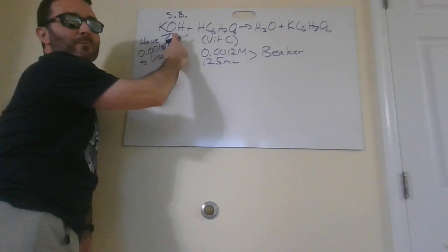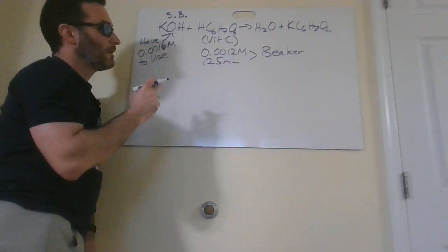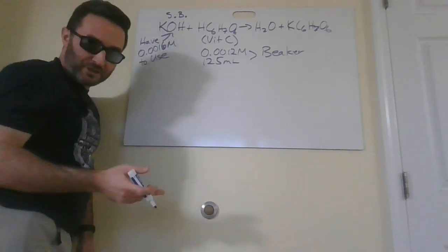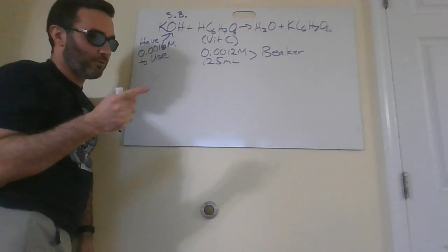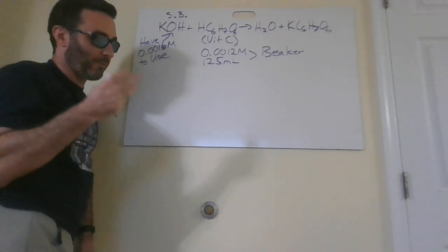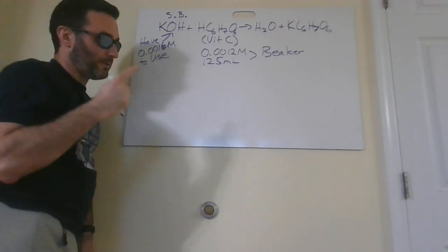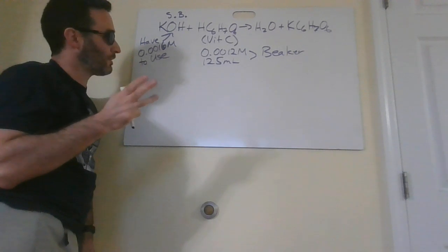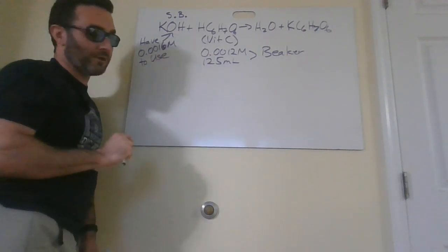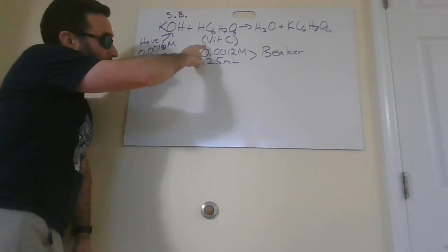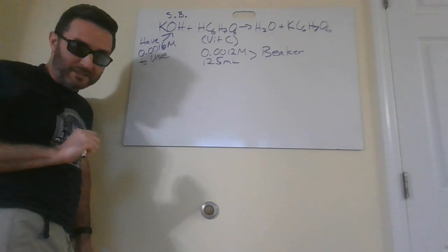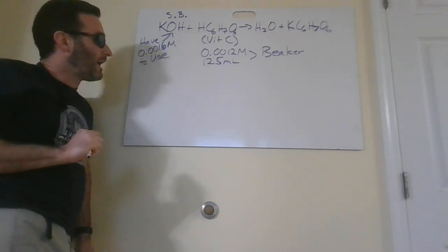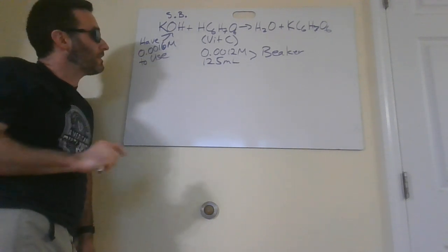These are the only strong bases we need to worry about. There are only six strong acids: hydrochloric, hydrobromic, hydroiodic, nitric, perchloric, sulfuric. This isn't one of them. In fact, it's vitamin C — it's ascorbic acid. So it's a weak acid.